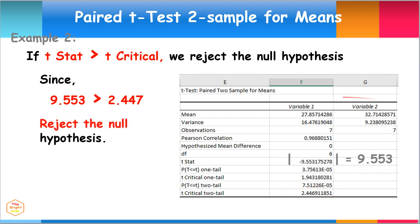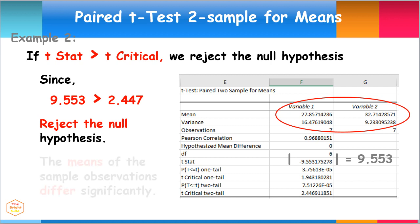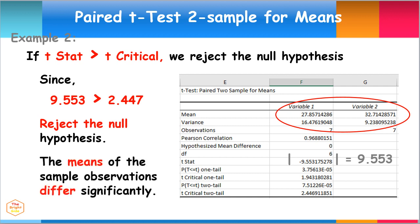The observed mean difference between 27.86 and 32.71 is convincing enough to say that the means of data from the control setup and experimental setup is significant. We can conclude that the means of the paired sample observations differ significantly.